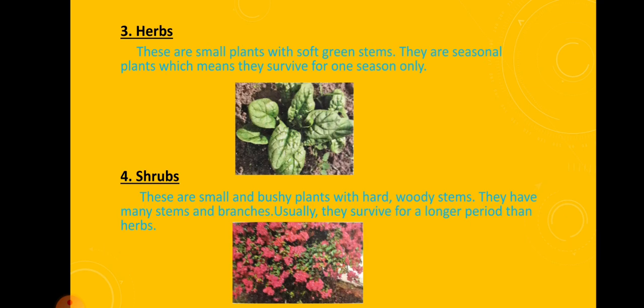Next is herbs. These are the plants with soft green stems and they are seasonal plants, which means they survive for one season only. All vegetable plants like spinach, mint, and coriander are herbs.